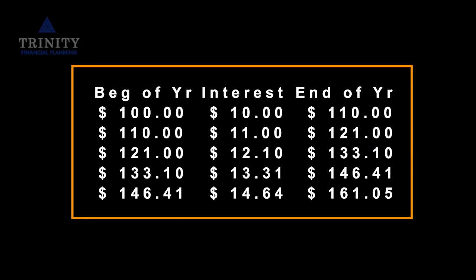Think about what happens — we can pull it up on the screen even. First year, 10% of $100, you have $10. End of the year, we've got $110. Now we're applying that 10% interest to $110. How much is that? Even we can do math in our head — 10% of $110 is $11 in interest. At the end of two years, we've got $121, not $120.